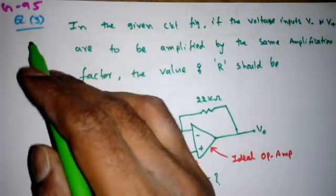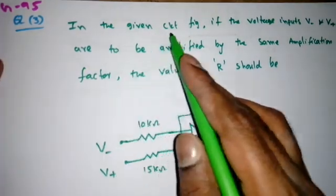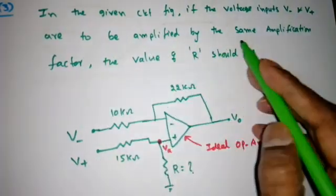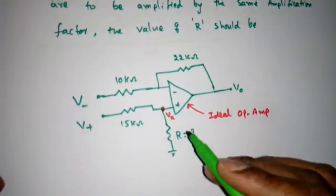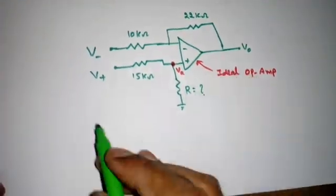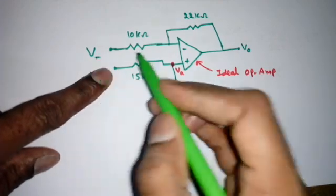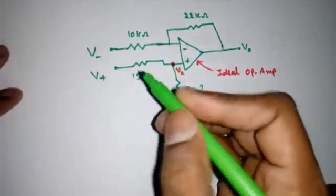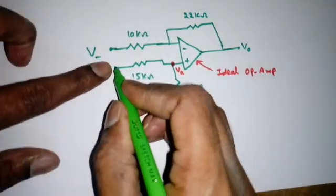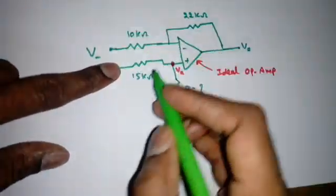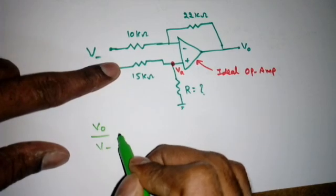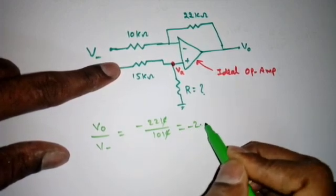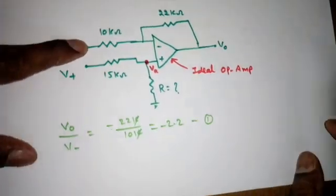This question came in GATE 1995. In the given circuit, if the voltage inputs V_minus and V_plus are to be amplified by the same amplification factor, the value of R should be. First we find the gain when considering only V_minus — V_plus becomes 0 and it becomes a simple inverting amplifier. V0/V_minus = -22 kΩ / 10 kΩ = -2.2. That is equation 1.